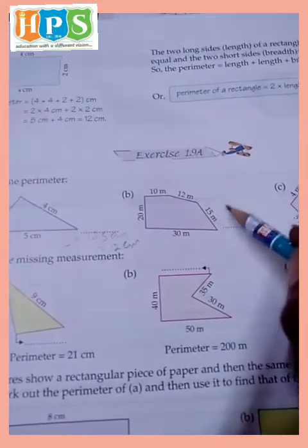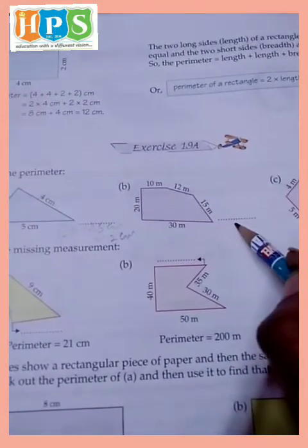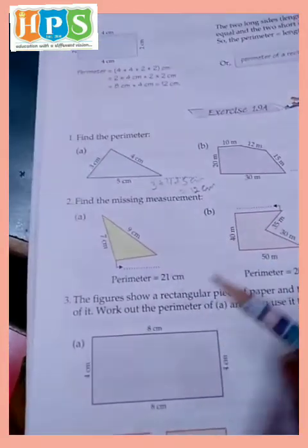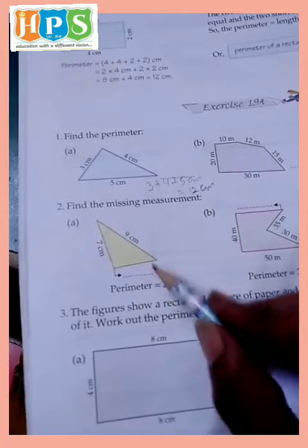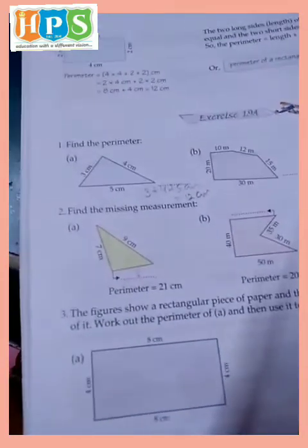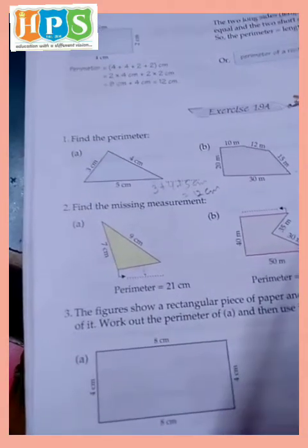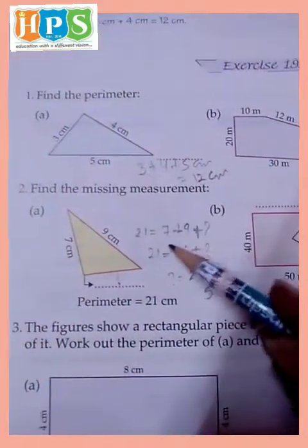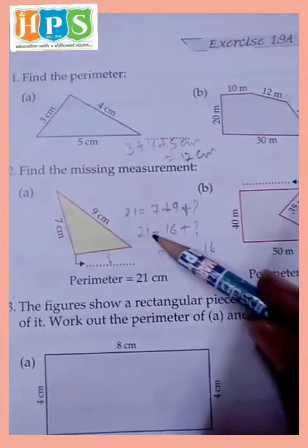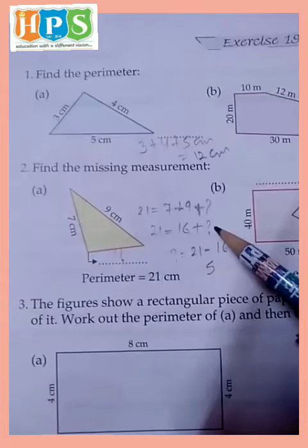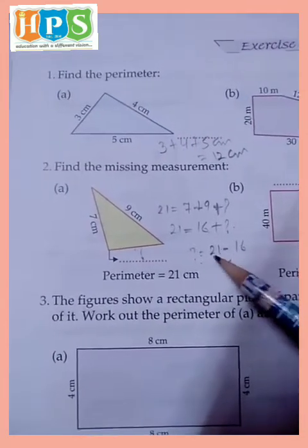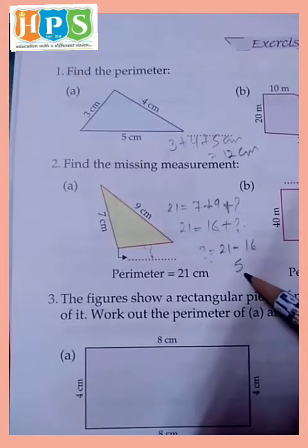20 plus 10 plus 12 plus 15 plus 13, add. Find the missing measurement: 7 and 9. And find this measurement and perimeter is 21. 21 is equal to 7 plus 9 plus 9 plus this side. 7 plus 9 is 16, and we find this side is equal to 21 minus 16, it means 5.